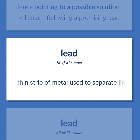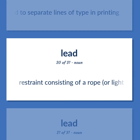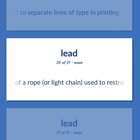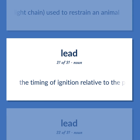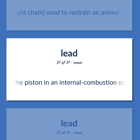Lead: Thin strip of metal used to separate lines of type in printing. Restraint consisting of a rope or light chain used to restrain an animal. The timing of ignition relative to the position of the piston in an internal combustion engine.